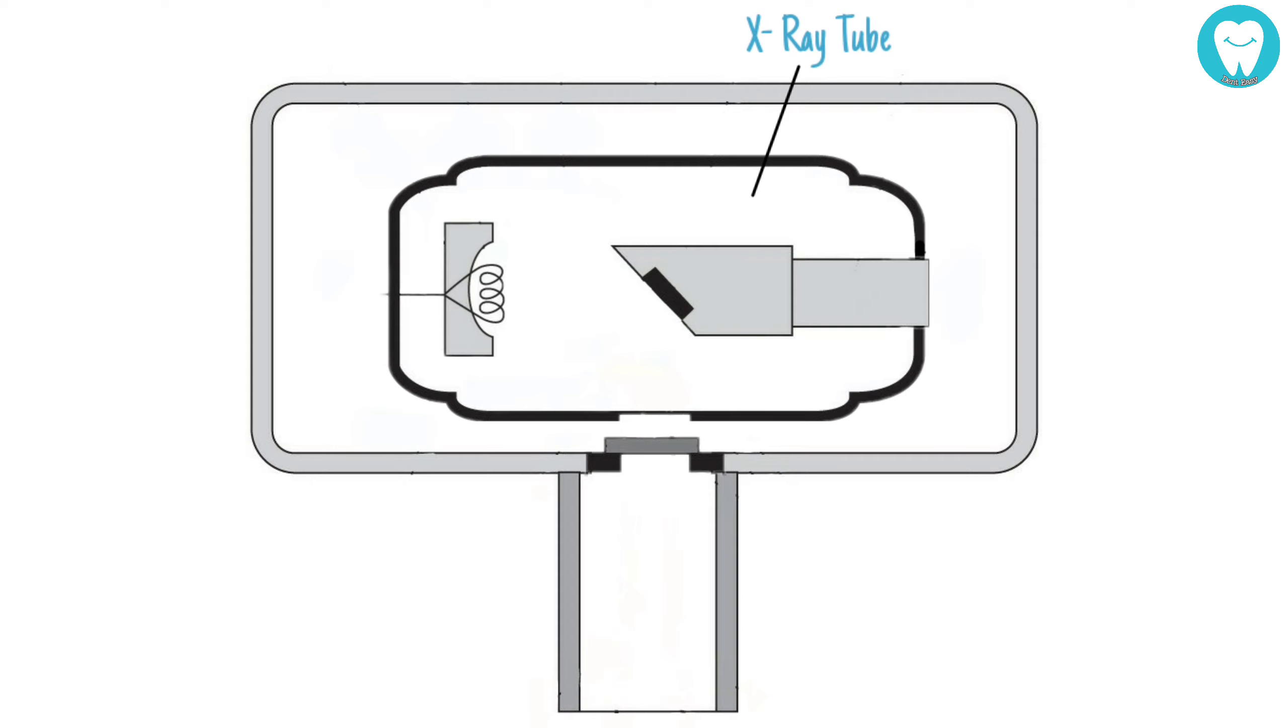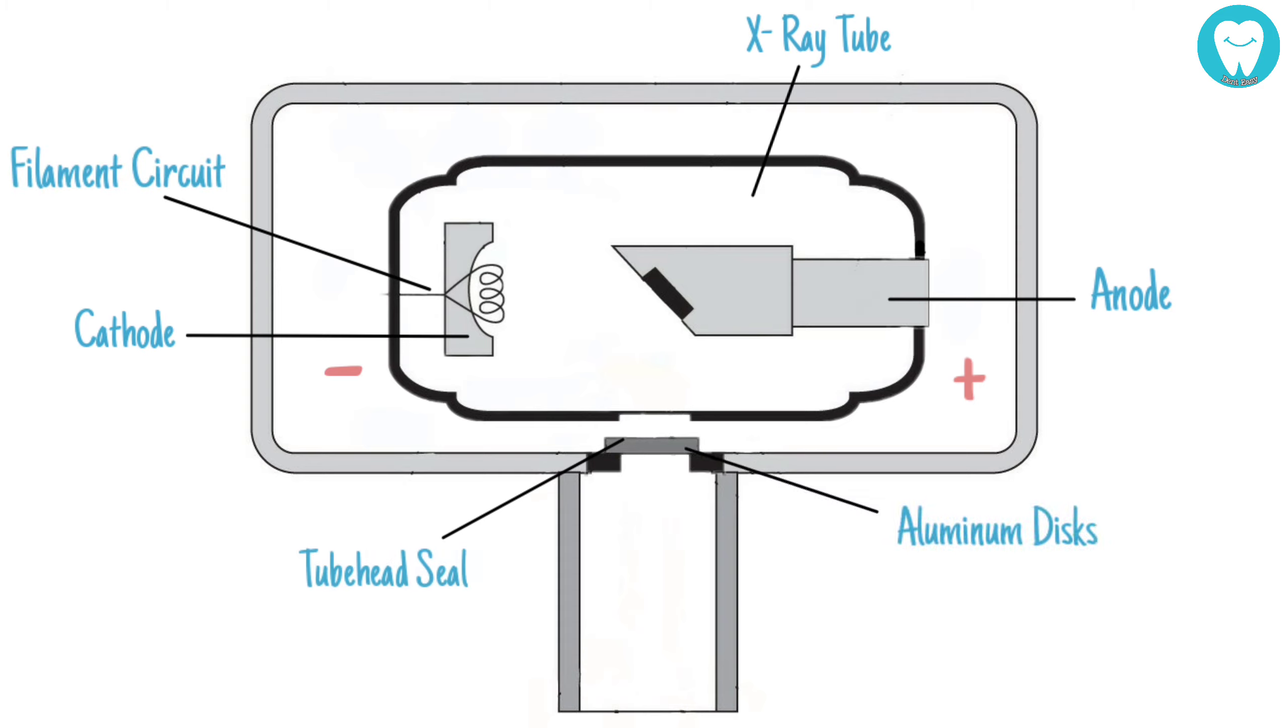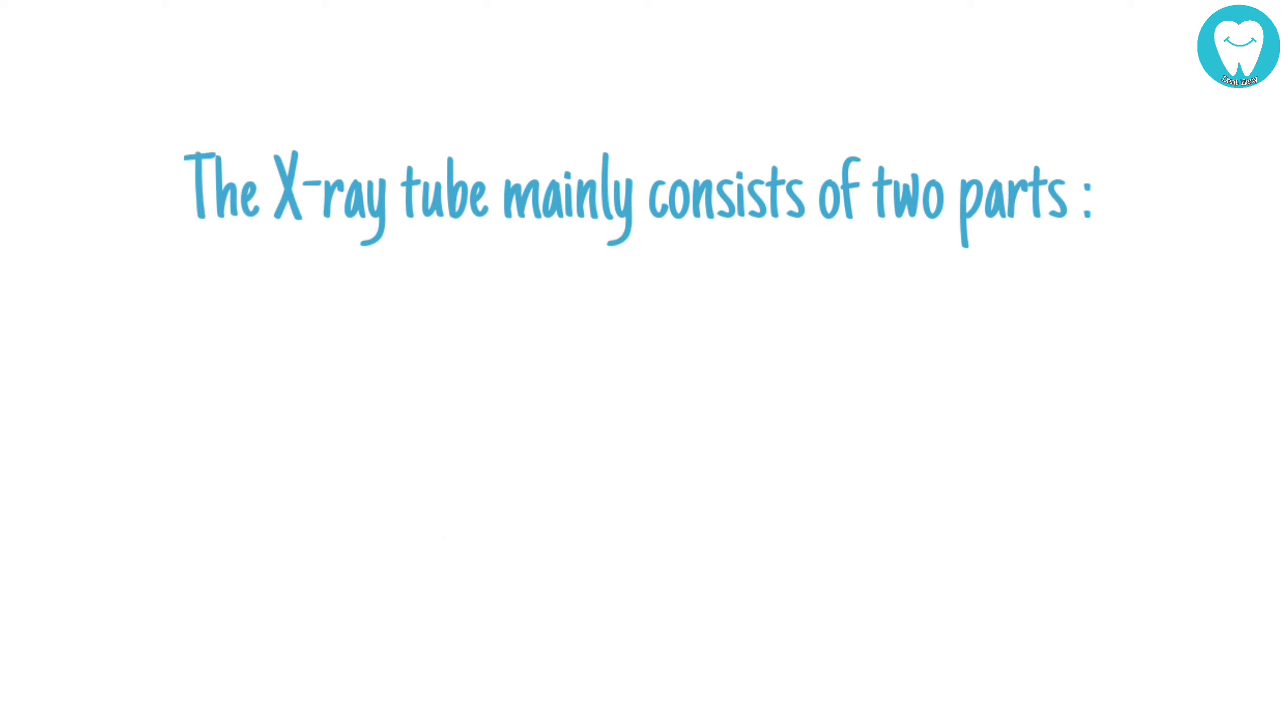Let's take a quick look at the parts of the X-ray tube: the cathode, anode, filament circuit, the tube head seal, aluminum discs, the lead collimator, the unleaded glass window of the X-ray tube, and the position indicating device.